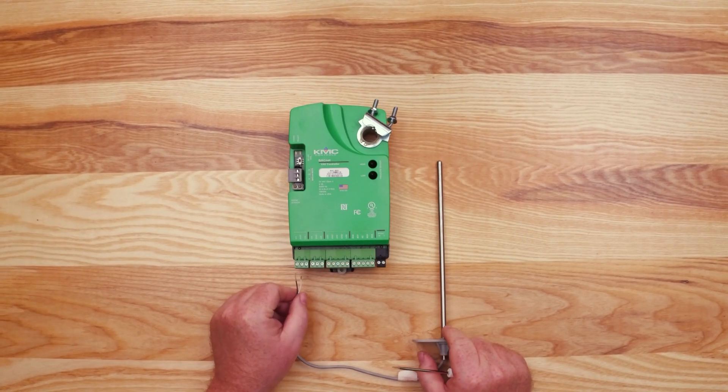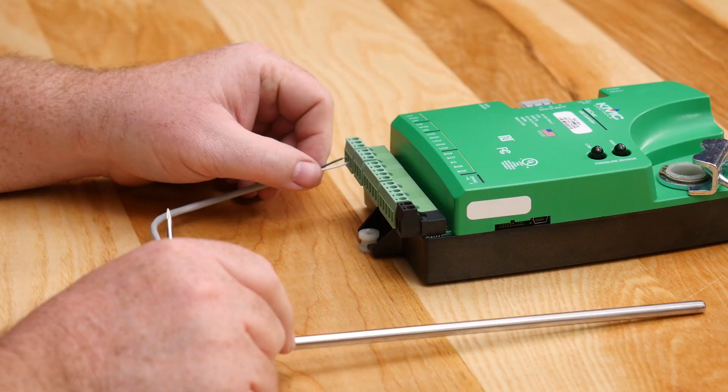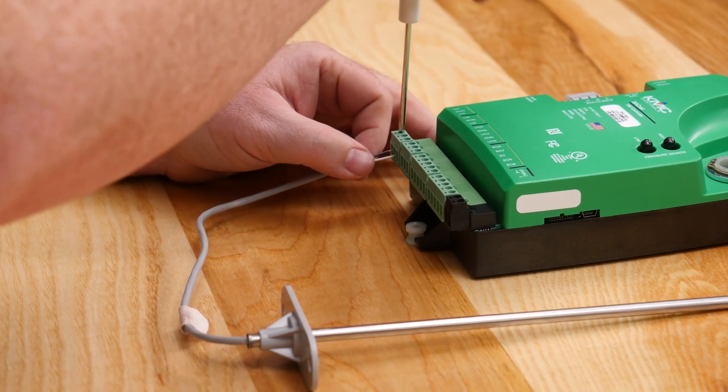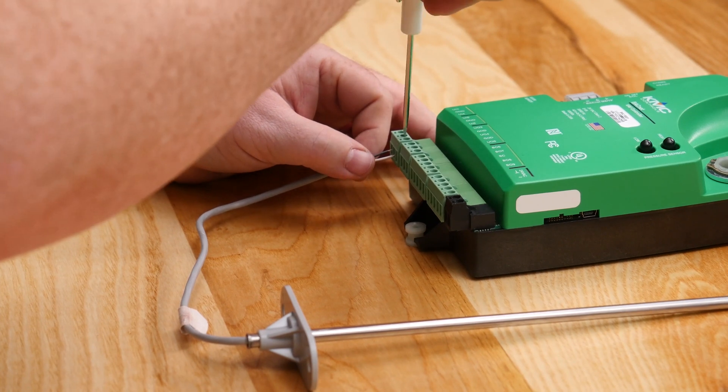When wiring the inputs, always make sure there is no power to the unit. The inputs consist of two wires, a signal wire and a common wire. Working with the first terminal block, insert the signal wire into the UI3 terminal and the common wire into the adjacent GND terminal.